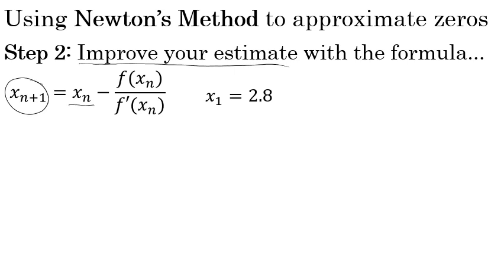Our original estimate was 2.8. We're going to call that x sub 1. That stands for our first estimate. Substituting that for x sub n in the formula, we'll say that our second better estimate, x sub 2, is equal to 2.8 minus f of 2.8 over f prime of 2.8.